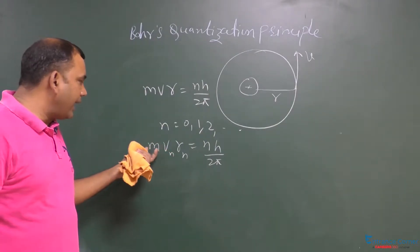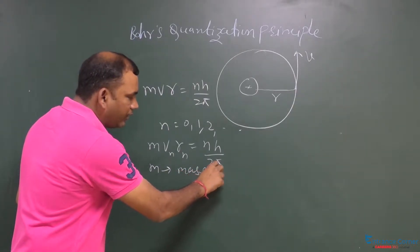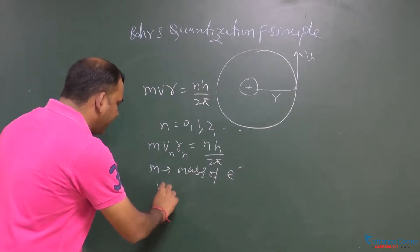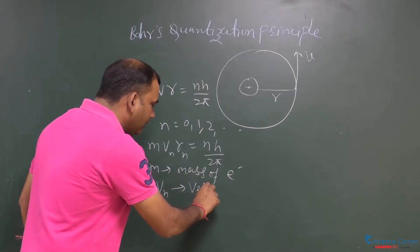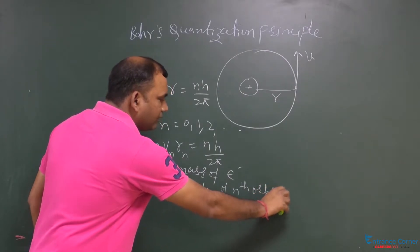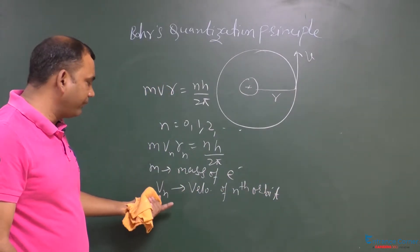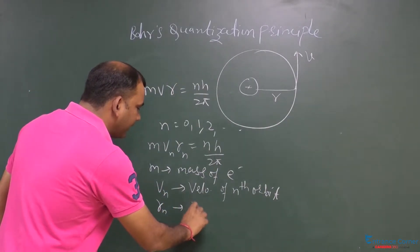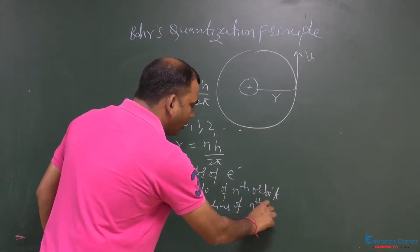Now, what is m? m is the mass of the electron and v_n, v suffix n means it is the velocity of the nth orbit. There are various orbits like 0, 1, 2, 3, 4, 5. So, n means nth orbit. Similarly, r_n is the radius of the nth orbit.